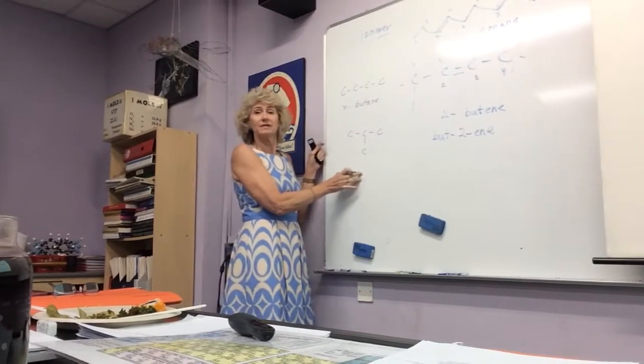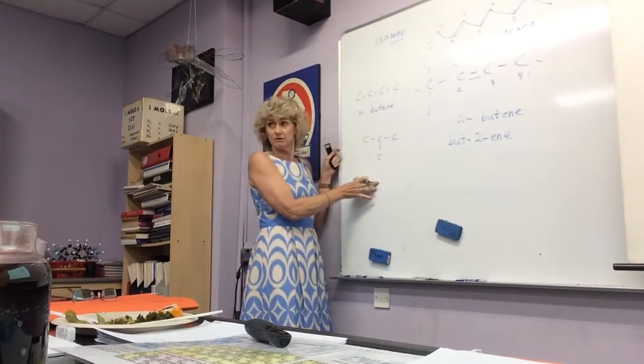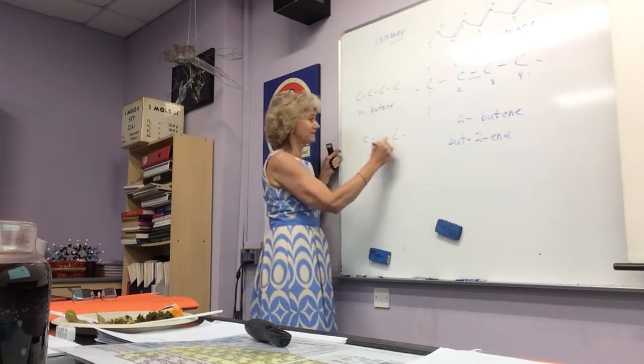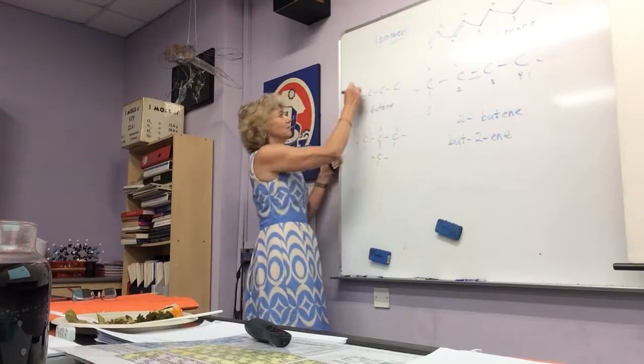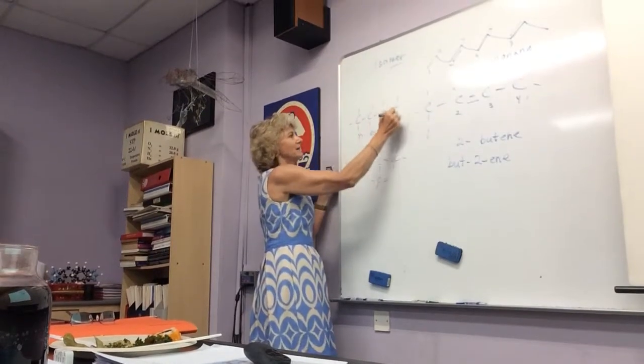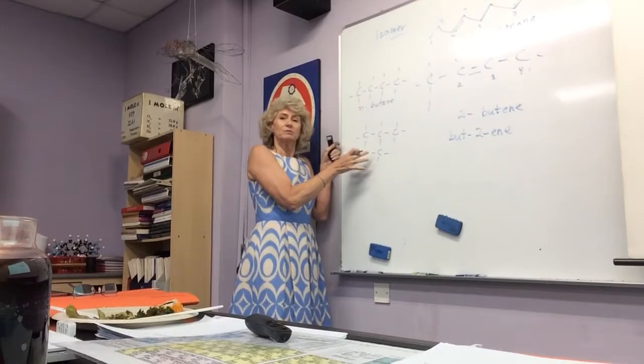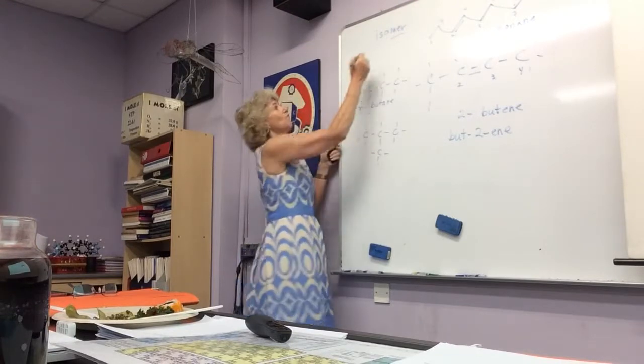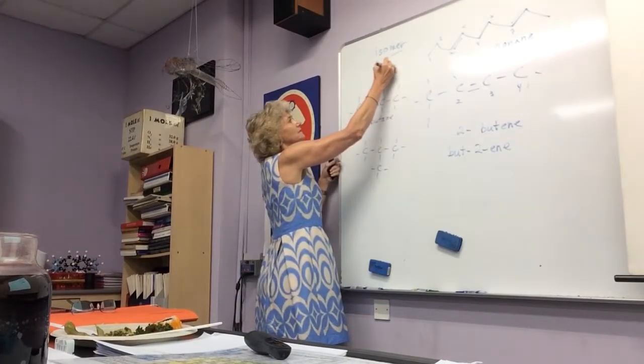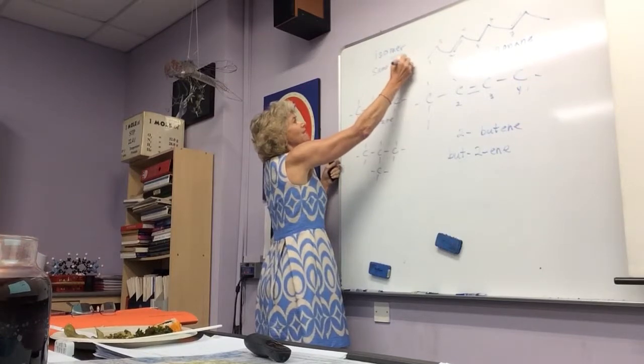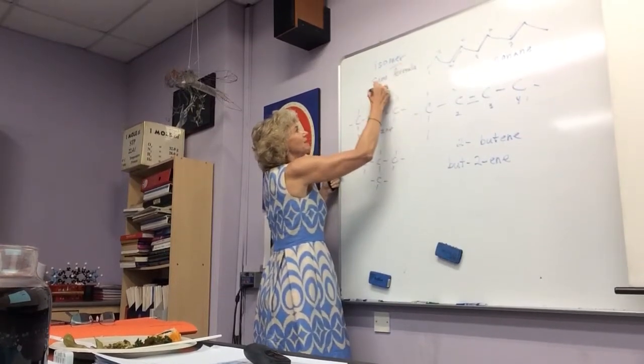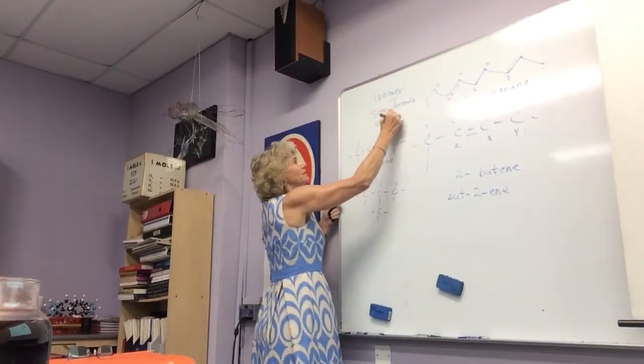But what if I took that last carbon and put it there? This is called isobutane because it's the same on either side. So, you guys, these are isomers. One, two, three, four, five, six, seven, eight, nine, ten. One, two, three, four, five, six, seven, eight, nine, ten. The same, you guys. The same chemical formula, but they have a different arrangement, and therefore they have different chemistry. They're very different.